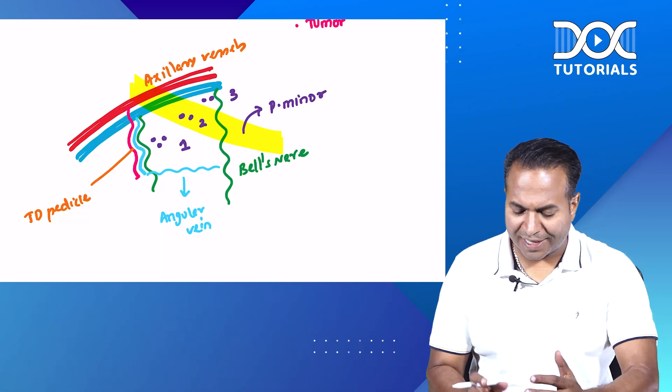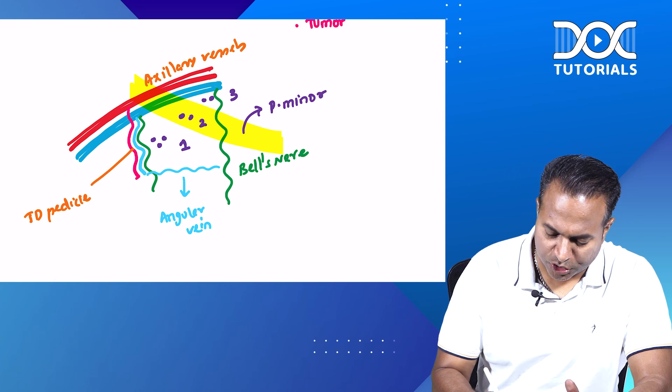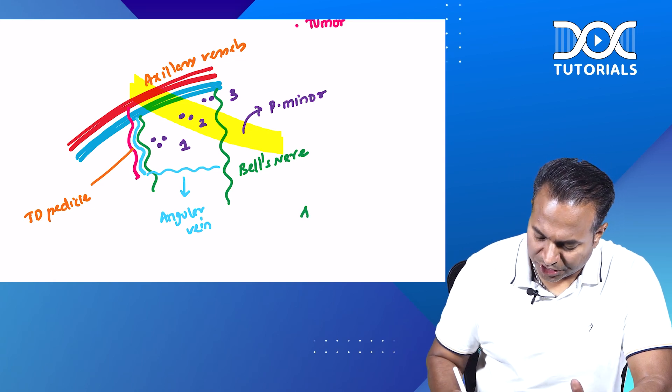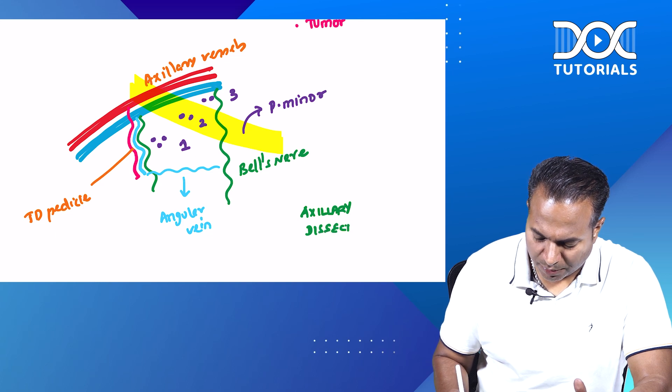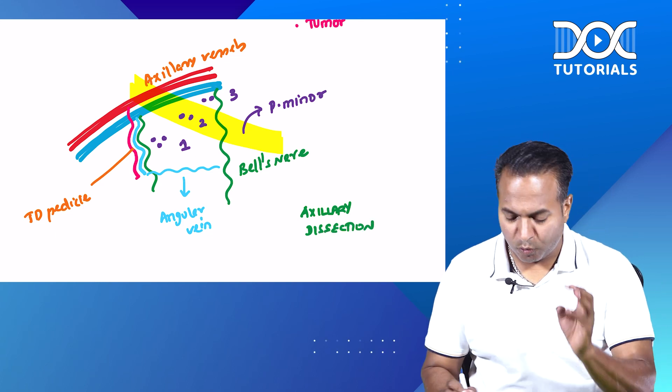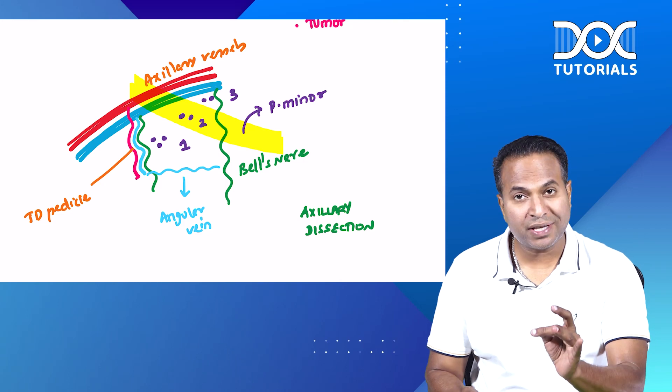And this is the anatomy of the axilla shown here. Axillary dissection is a part of MRM procedure in which we remove level one, level two, level three nodes.